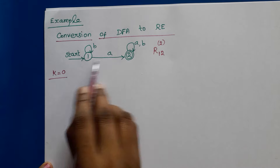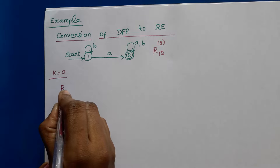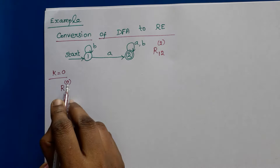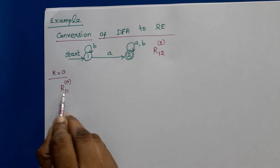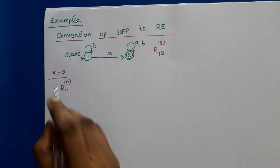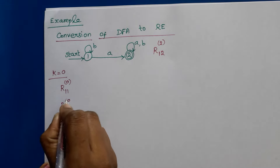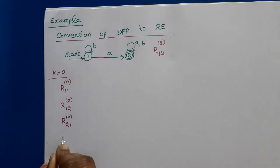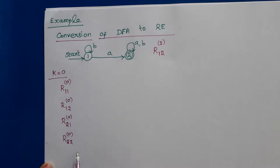This DFA has only two states, so there are four possibilities: r11, r12, r21, and r22, all to the power 0.